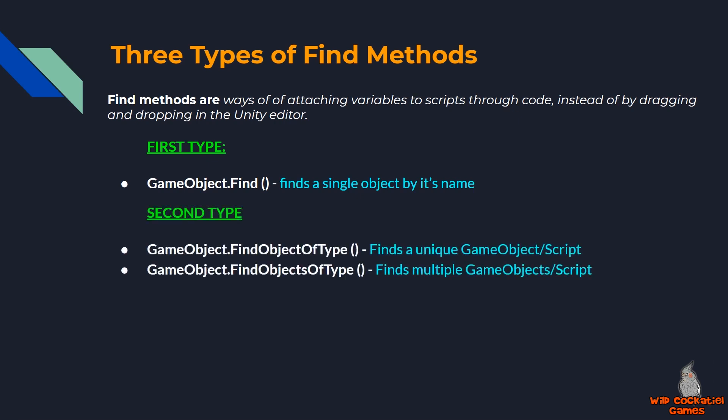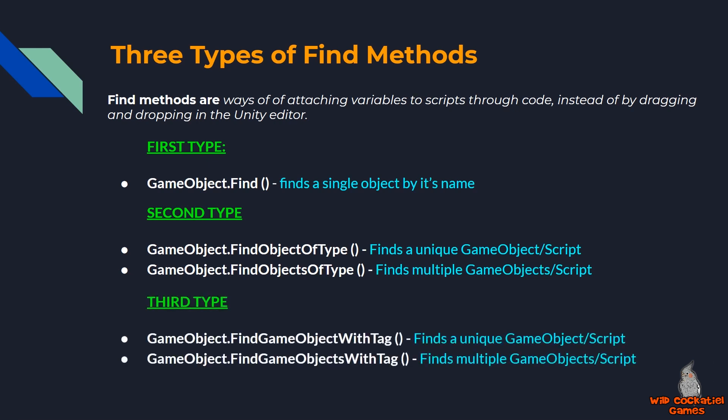The second is using GameObject.FindObjectOfType, where we can seek out and attach a specific script or scripts, animators — basically whatever type of object we want to look up and return. And the third type is FindObjectsWithTag, where we use tags to look for objects and attach those to our variables, allowing us to assign different types of objects.